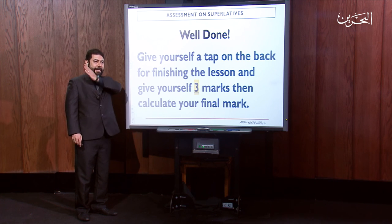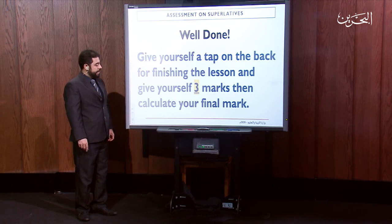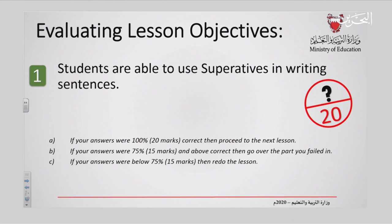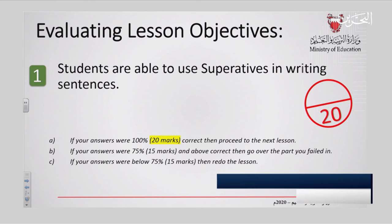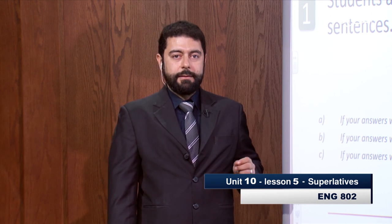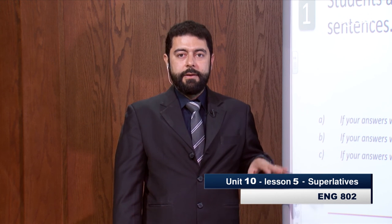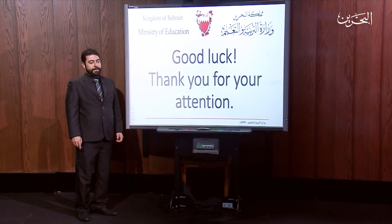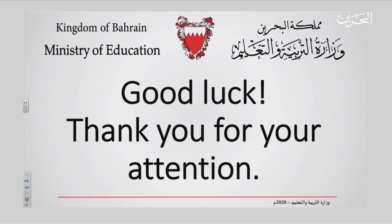Well done. Give yourself a tap on the back for finishing the lesson and give yourself three marks. Then calculate your final mark. Evaluating lesson objectives — you are now able to use superlatives in writing sentences. You have a mark out of 20. If you have 100% correct answers, that means 20 marks, proceed to the next lesson. If you have 75% or above, that means 15 or higher, go over the part you failed and redo it. If you have 70% or lower, go over the whole lesson. As always, practice makes perfect. Good luck. Thank you for your attention.